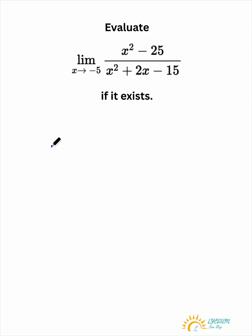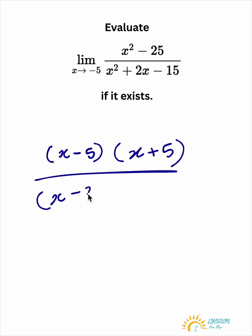The top, we can simplify that down to x minus 5 times x plus 5. The bottom simplifies to x minus 3,